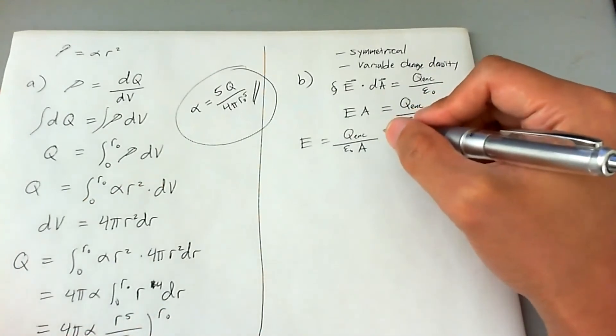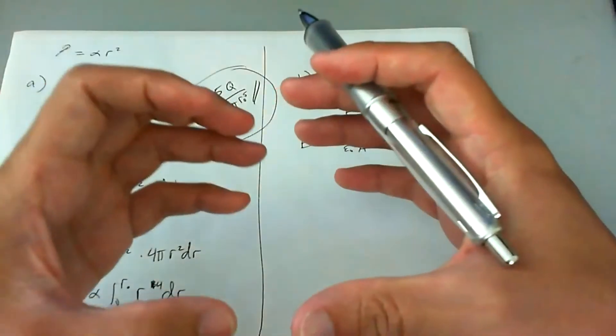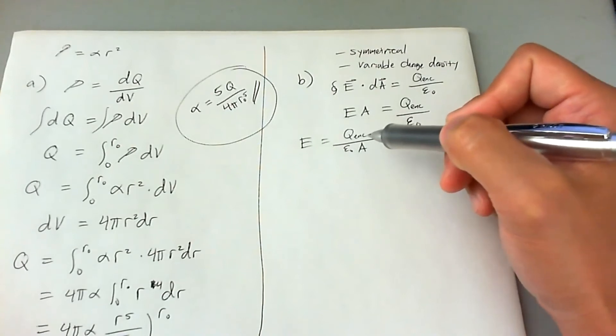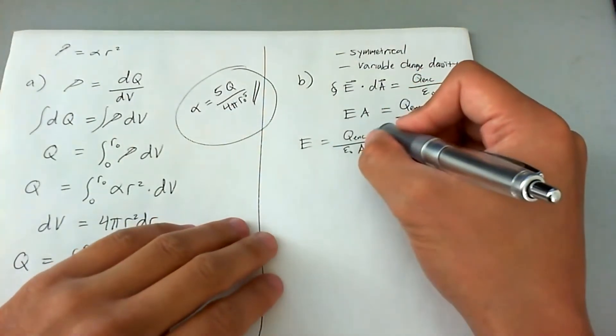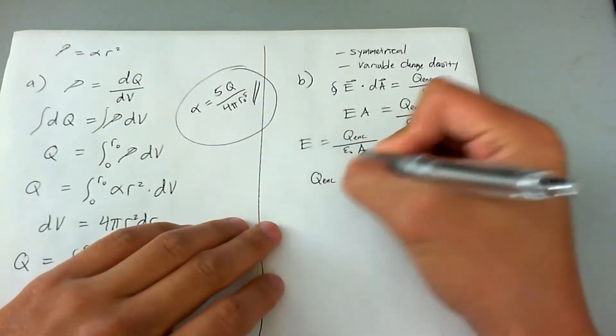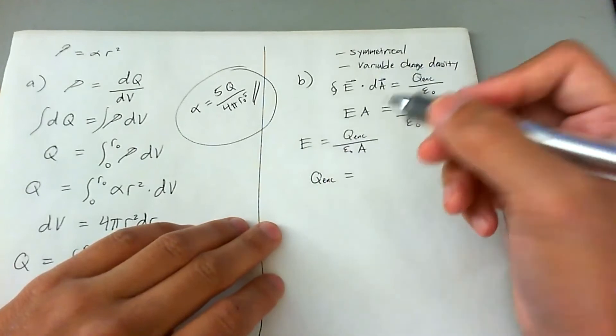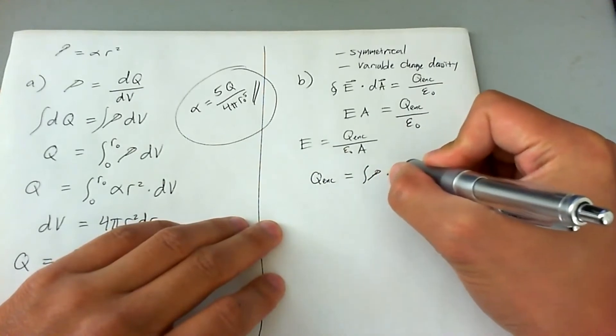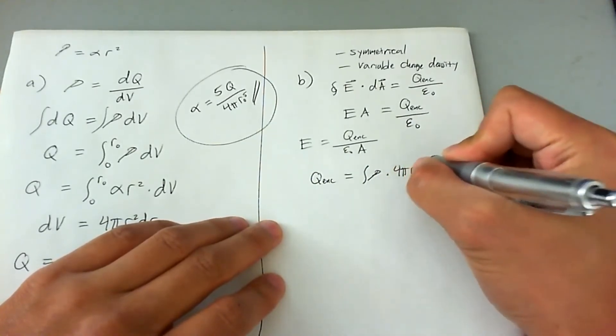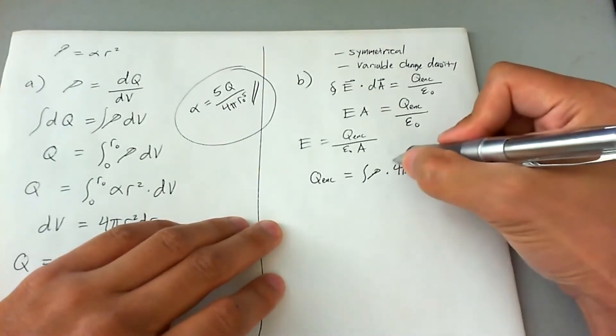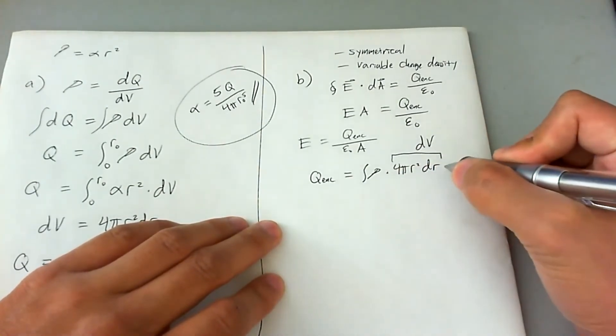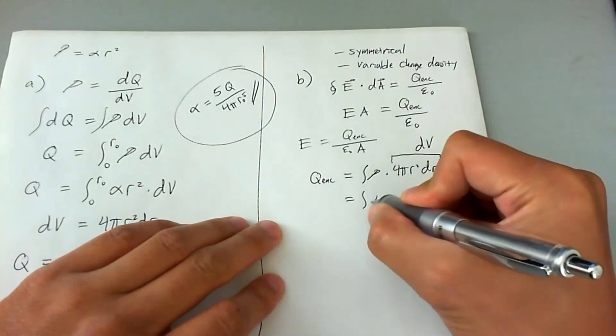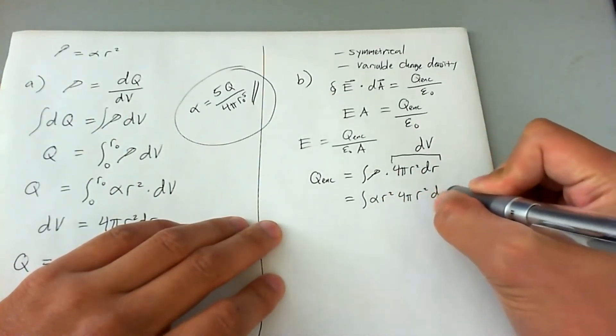Thing is, we don't know what Q enclosed is, especially for inside the sphere. Outside the sphere, we know that Q enclosed is simply just going to be Q, which is given in the problem. So what we're going to do is we're going to go ahead and figure out what Q enclosed is in this Gaussian curve by invoking the charge density equation. So Q enclosed is the integral of the charge density times 4 pi r squared dr. And this was the D-V for a sphere. Rho is equal to alpha r squared. So we're going to say alpha r squared 4 pi r squared dr.